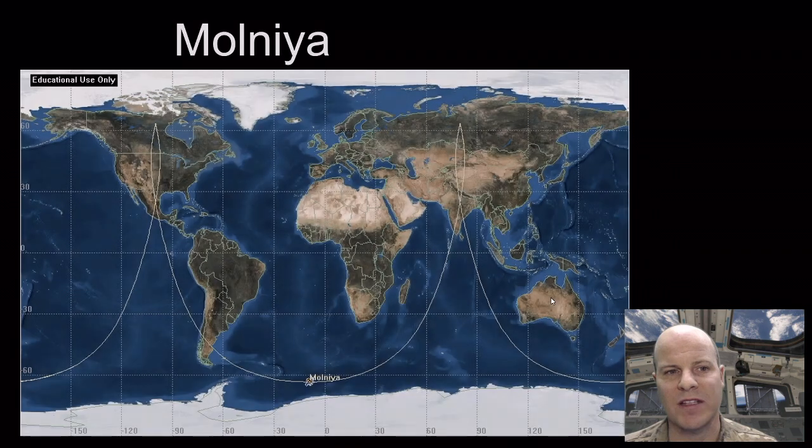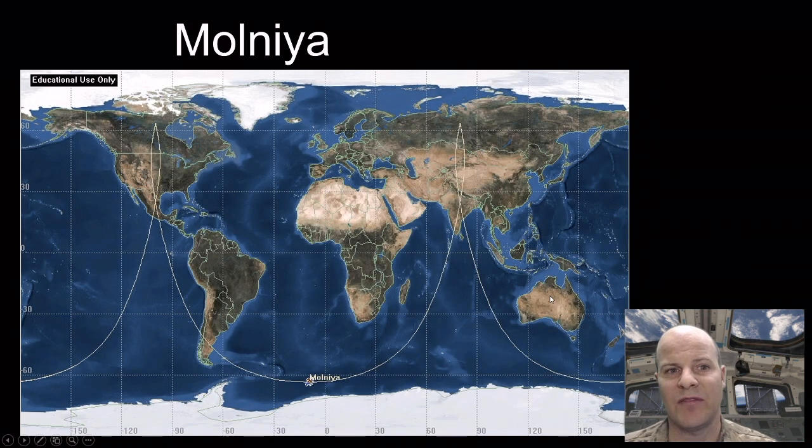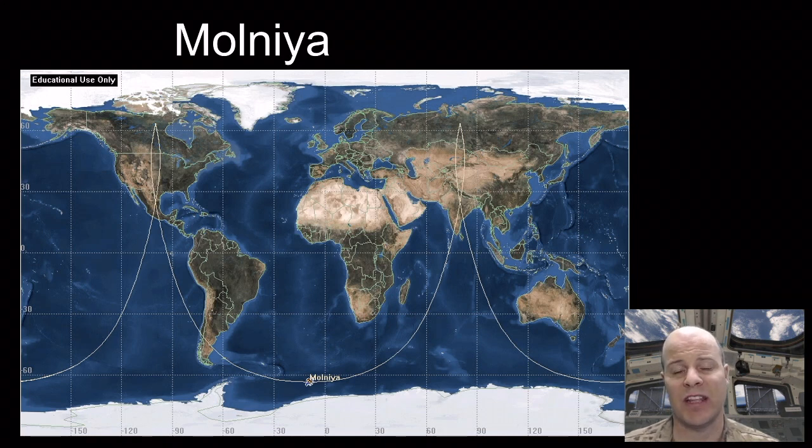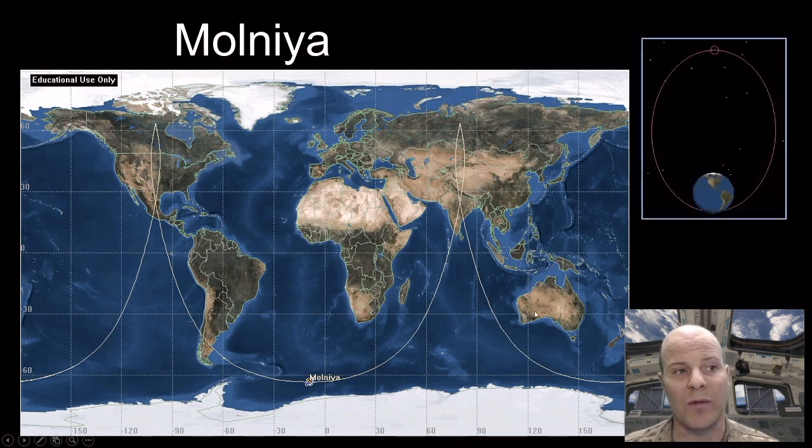Well, there's particular orbits that actually take advantage of the fact that there are particular moments or particular places where that essentially that J2 effect is going to cancel itself out and we don't get that rotation. And one of those orbits is actually the Molniya orbit or the lightning orbit that the Russians actually use.